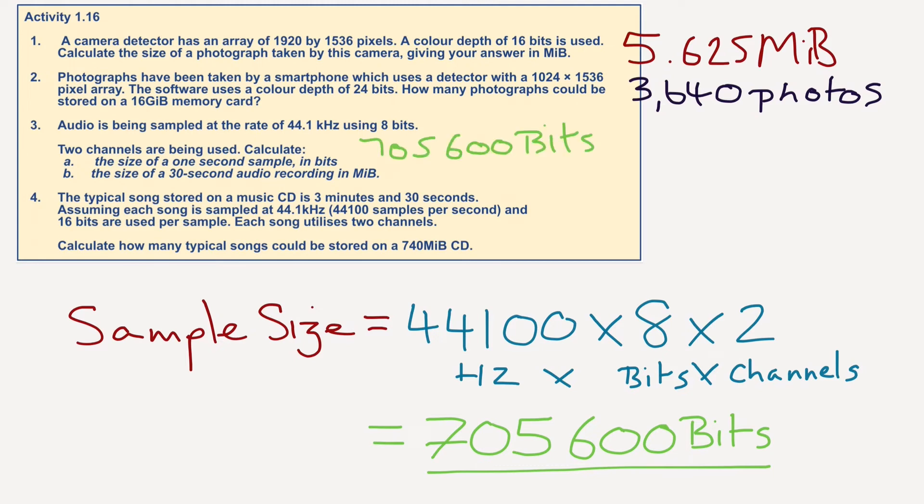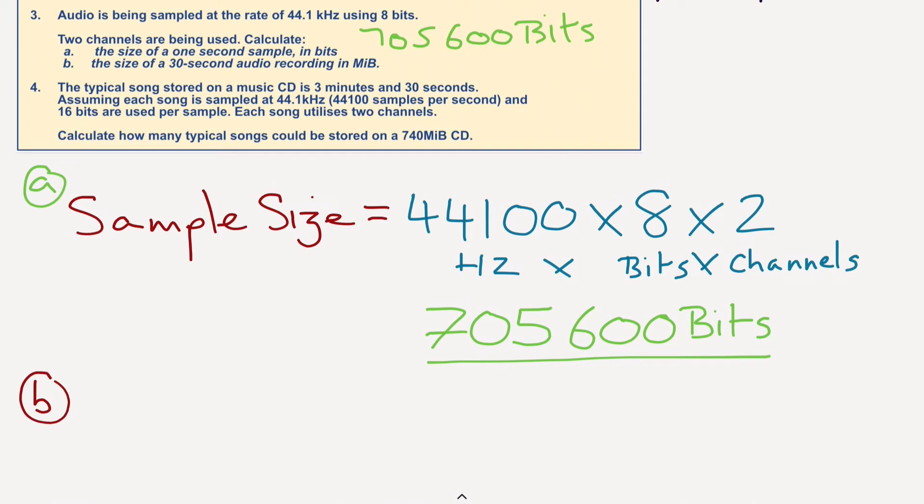Now what we've got to work out now is the size of a 30-second audio recording in megabytes. So for part B, I've got to multiply that figure there by 30. But then I've got to turn it into megabytes. So let's do the calculation 30 times 705,600, which would equal 21,168,000, like so, and that is, again, that's in bits.